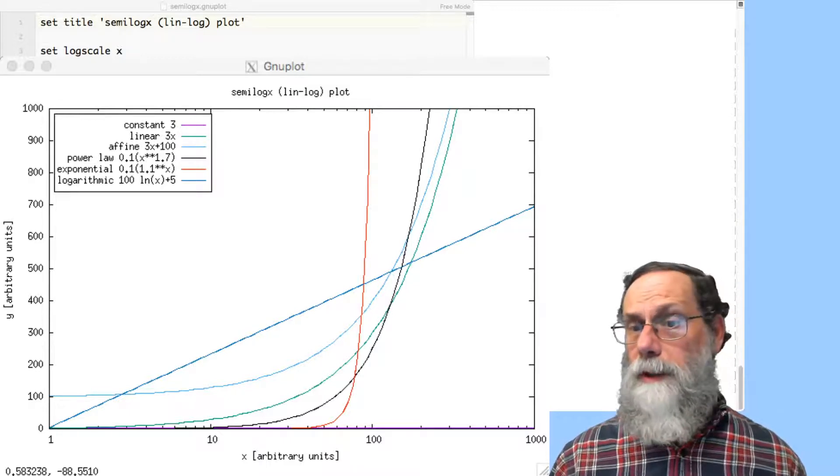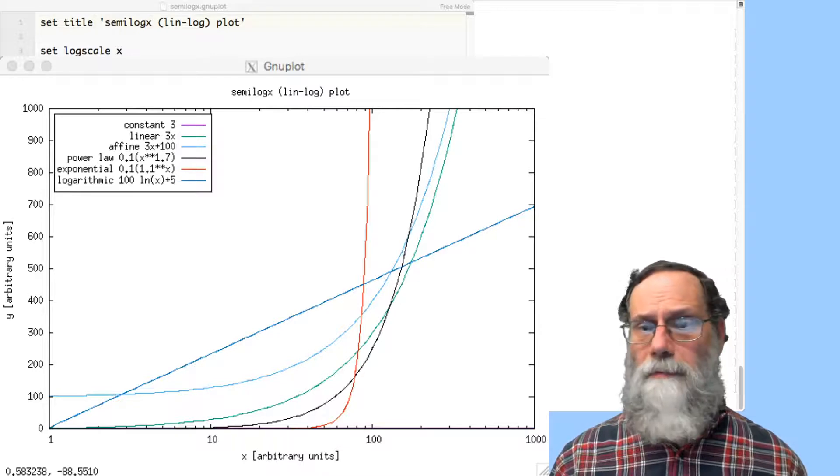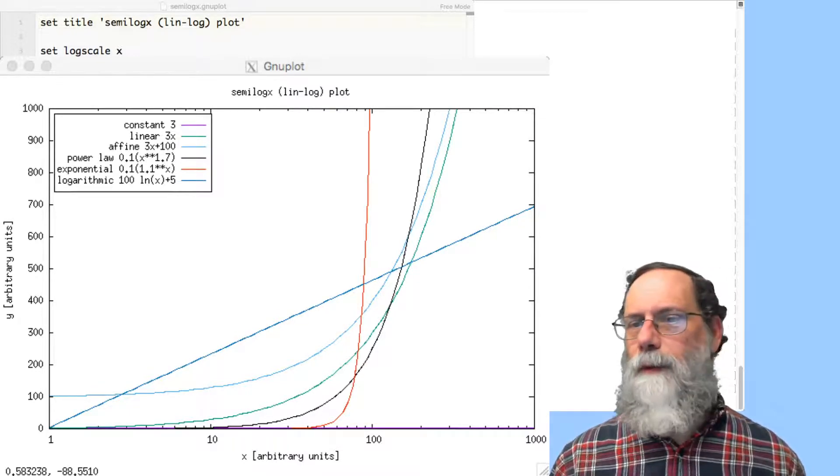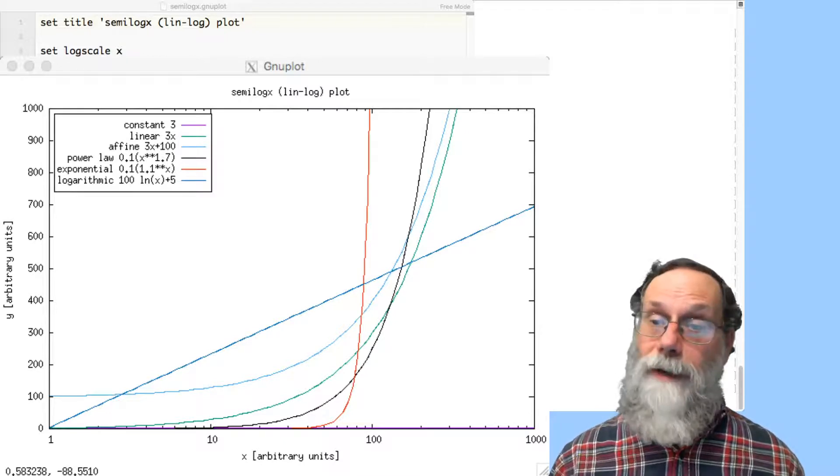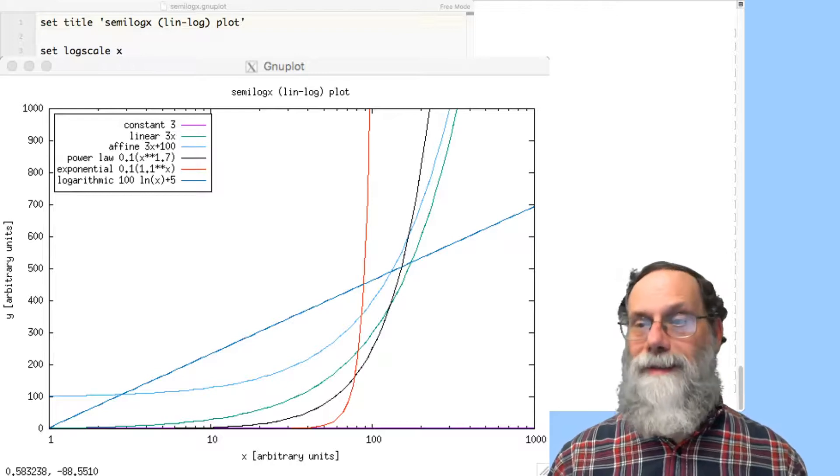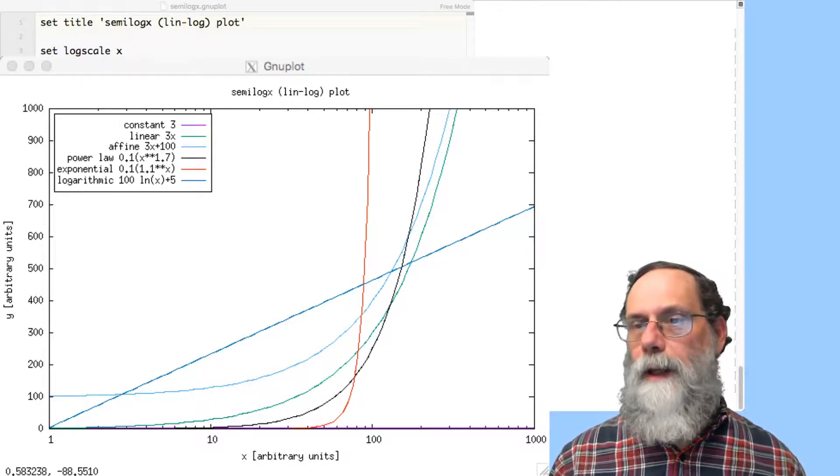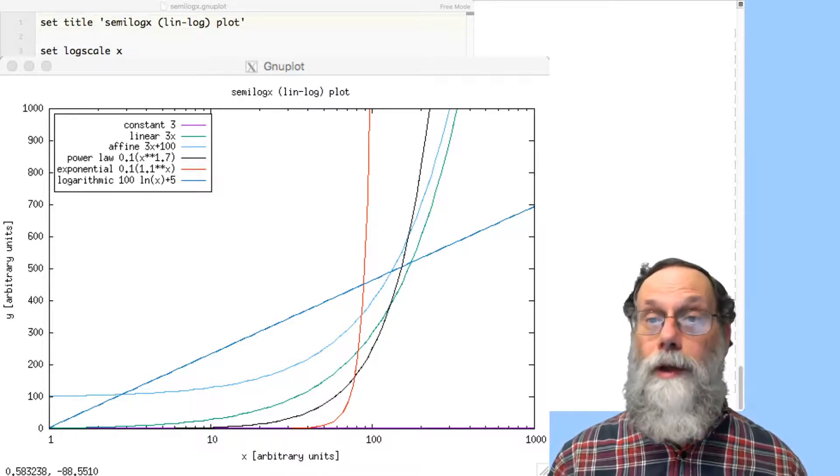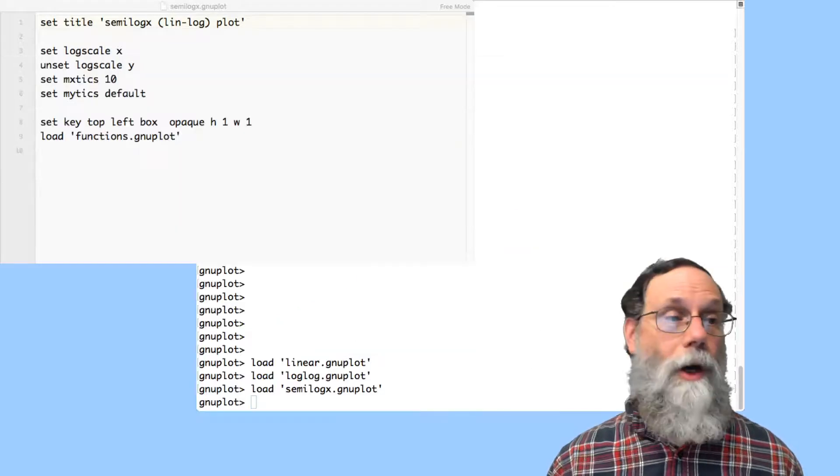And let's take a look particularly the exponential there, that red one, because it looks like it's zero all the way out to 40 or 50, and then it goes almost vertical. And people will often think of exponentials as being, oh, there's a horizontal part and a vertical part. And there's a change in behavior here at this threshold value. And it's an illusion.